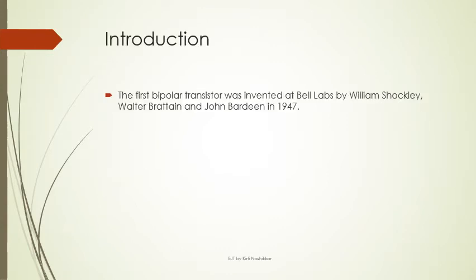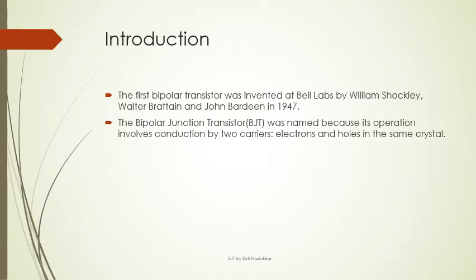The first bipolar transistor was invented at Bell Labs by William Shockley, Walter Brattain and John Bardeen in 1947, and they got the Nobel Prize for the invention of transistor in the field of physics. It was named BJT because its operation involves conduction by two carriers — electrons and holes — in the same crystal.